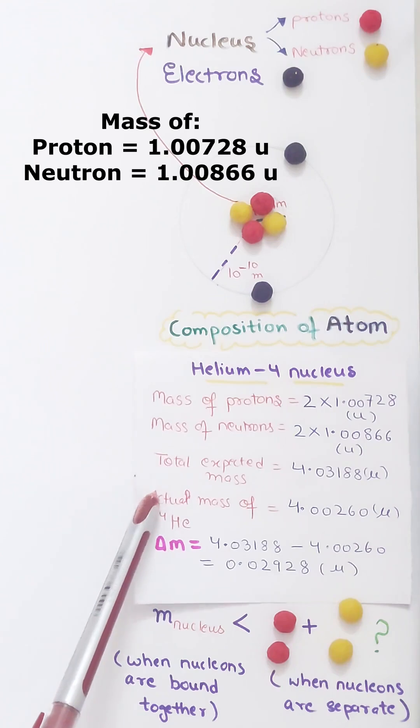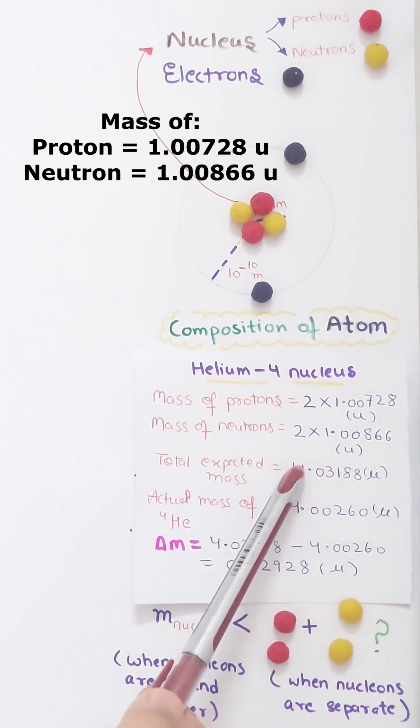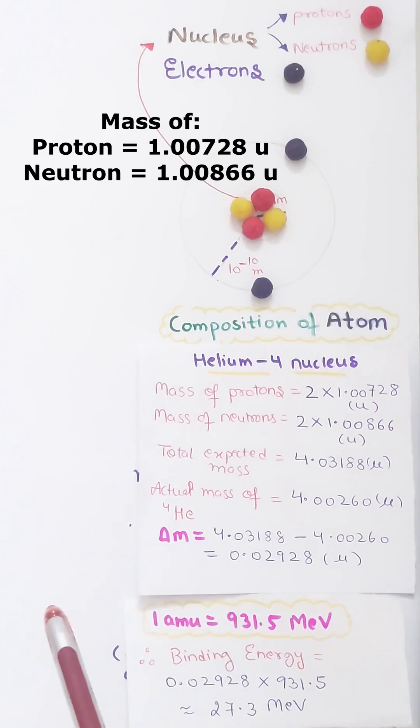However, it is observed that the actual mass of helium-4 is slightly less than the total expected mass. So mass defect is the expected minus the observed mass. Also, the relation between atomic mass units and MeV units of energy is this. Therefore, the binding energy of helium-4 nucleus comes out to be this.